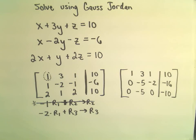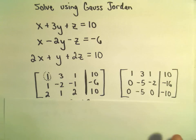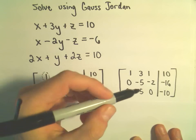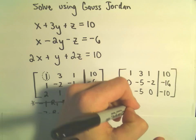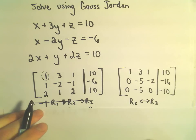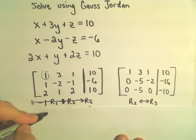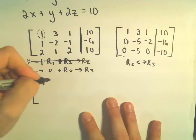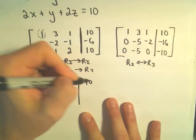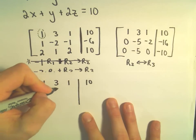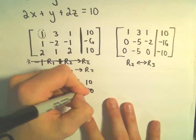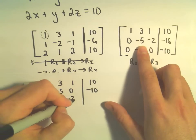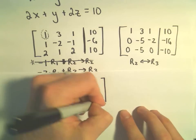There are a couple different things we could do here. I want to eventually make a 1 appear in the middle position, so I'm going to interchange row 2 and row 3 — just switch those out. Nothing happens to our first row, so we still have 1, 3, 1, 10. Now row 2 becomes 0, negative 5, 0, negative 10, and row 3 becomes 0, negative 5, negative 2, negative 16.